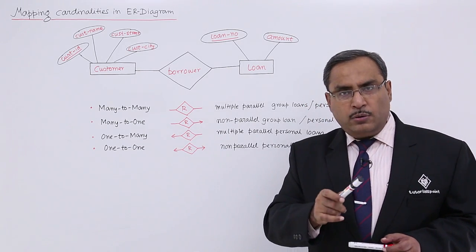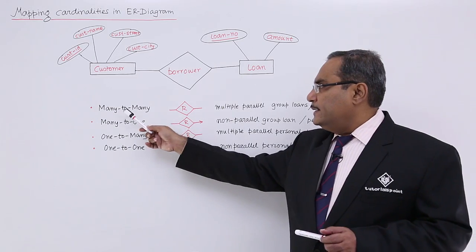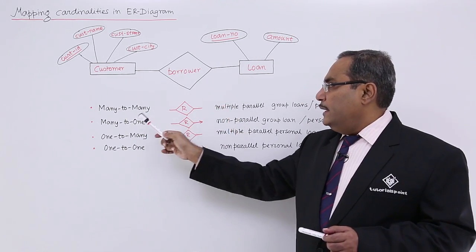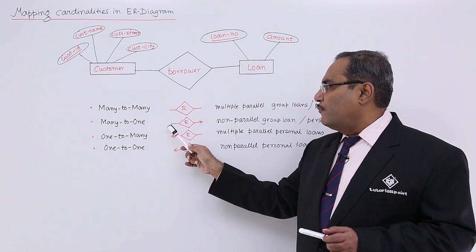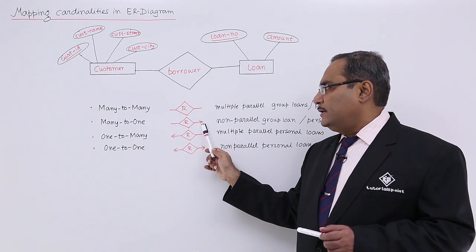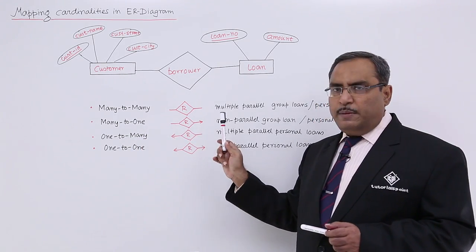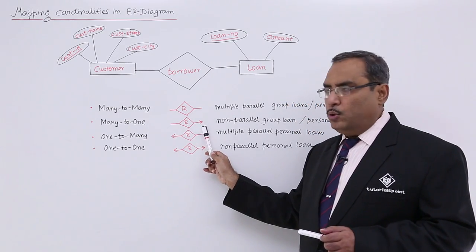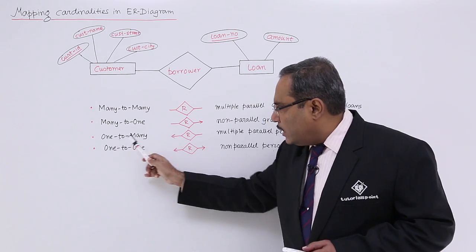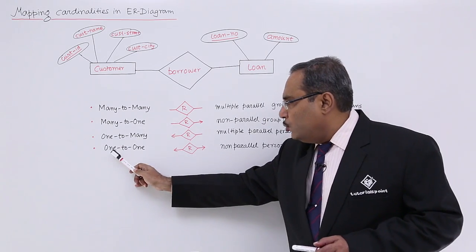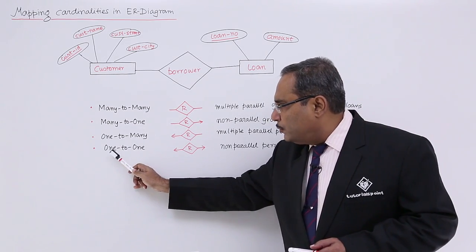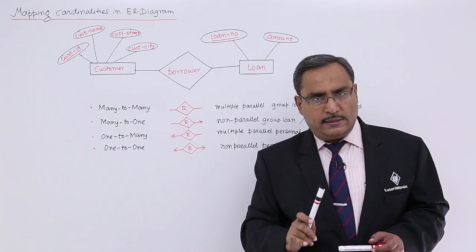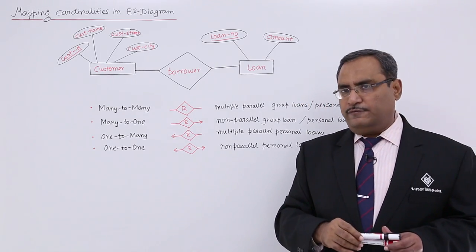As discussed in the earlier video, in case of many-to-many there will be no arrow. In case of many-to-one, there will be an arrow from one side to the other. Always remember: whenever you find 'one', that side will have an arrow. Whenever there is 'one' on both sides, arrows will be on both sides. Just remember this — it will be easier to understand.